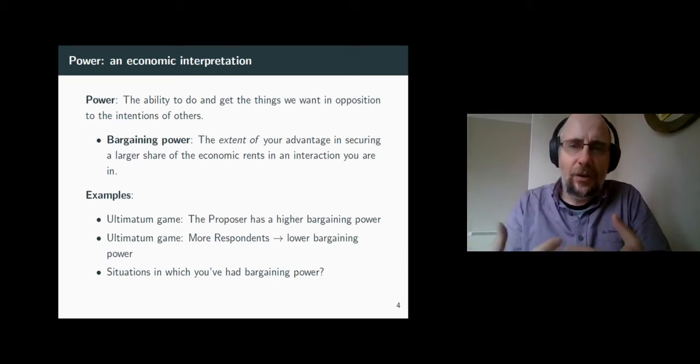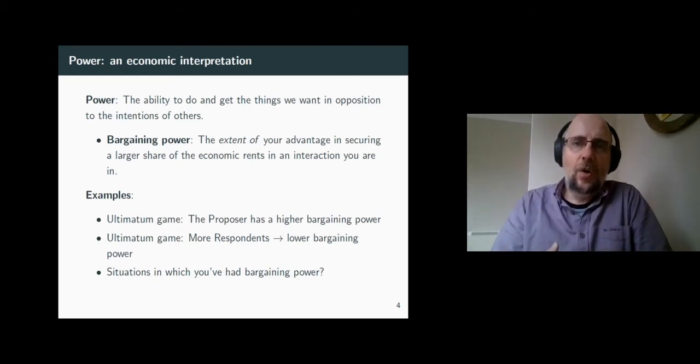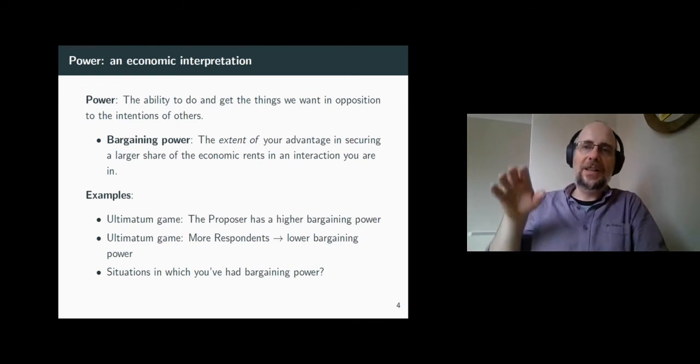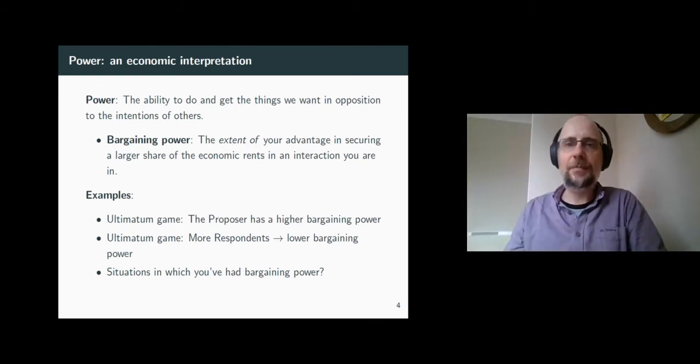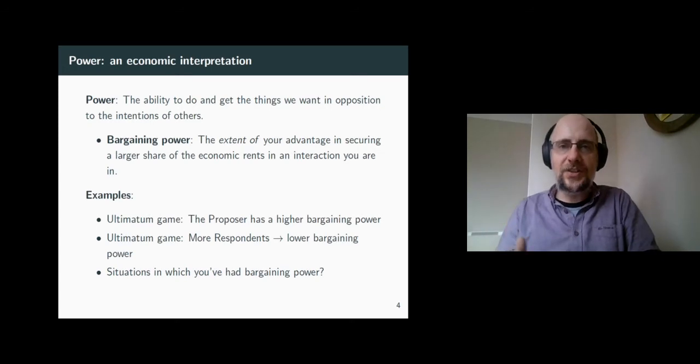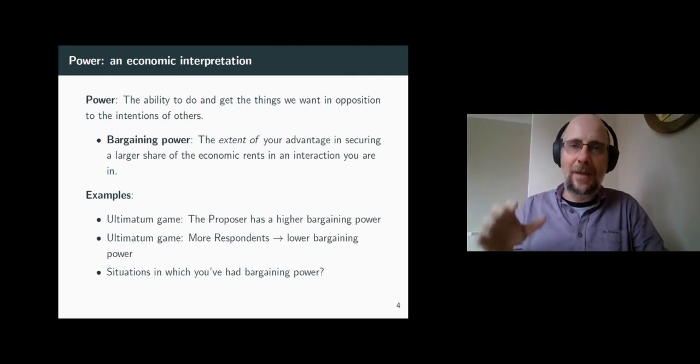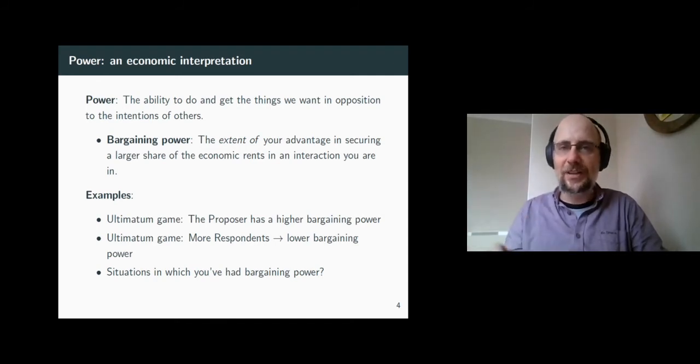For example, in the ultimatum game where one of the people found a hundred bucks first and becomes the proposer in the game, the proposer has the bargaining power in that game. The proposer can secure a larger share of the pie by the power vested in them by the rules of the game. Now also notice how the number of respondents was in negative correlation with their minimal acceptance offer. The more competitors you've had for the share of the pie, the lower the amount each of them is ready to accept.